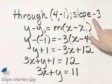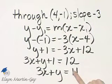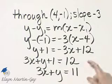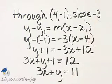How can you see if the slope is negative 3? You can solve this for y. Notice you'd have negative 3x plus 11. The coefficient of x would be negative 3, and that is your slope.